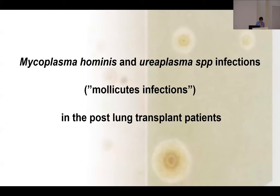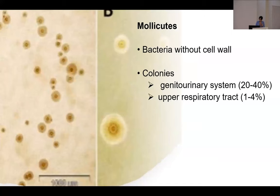Thank you very much. I'm going to talk about mycoplasma hominis and ureaplasma species infections. I'm going to refer to them as 'molecule' infections from here onwards because it's quite a mouthful to say again and again. Molecules are a kind of group of bacteria that do not have any cell wall. They usually colonise our genitourinary system, up to 40%, and less so the upper respiratory tract, up to 4%. This picture shows the fried egg appearance of mycoplasma hominis cultures.